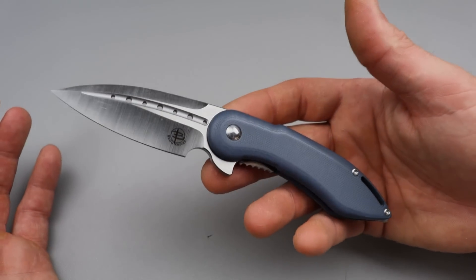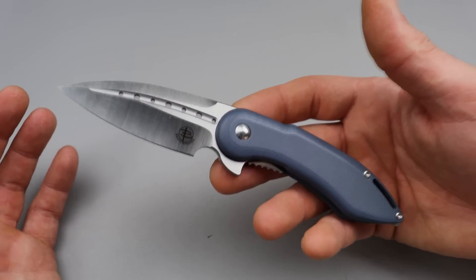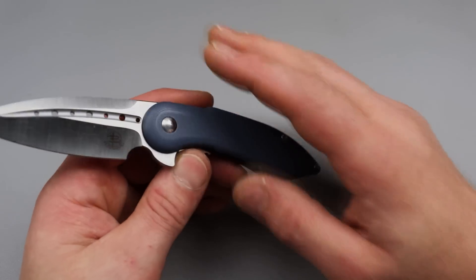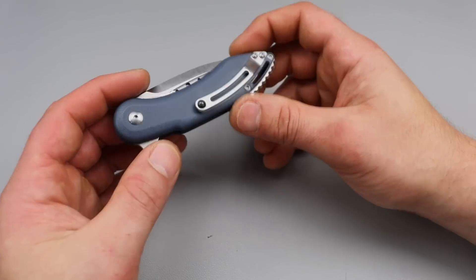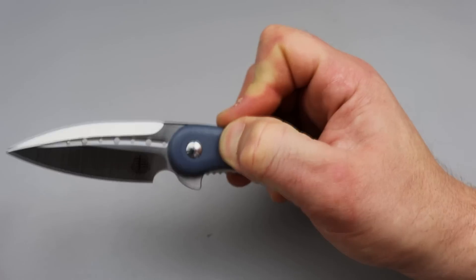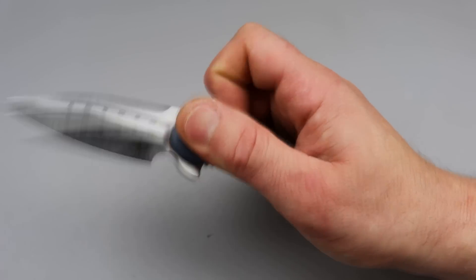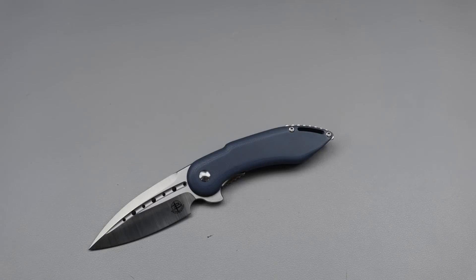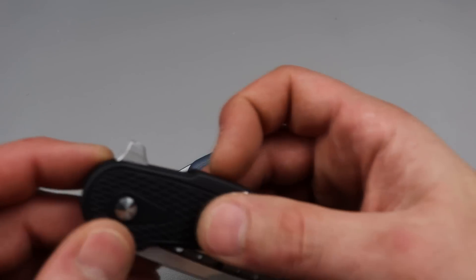This is the Begg Knives Mini Glimpse. And I got to say for 80 bucks, man, I really like what Begg Knives is doing. Now, this one is a compact small knife, but it has some snappy action. I got to give Begg Knives credit. They have probably the best action knives I've felt from this price range in a long time.